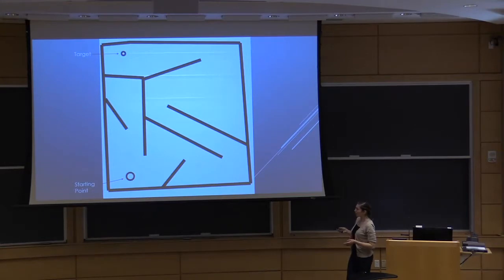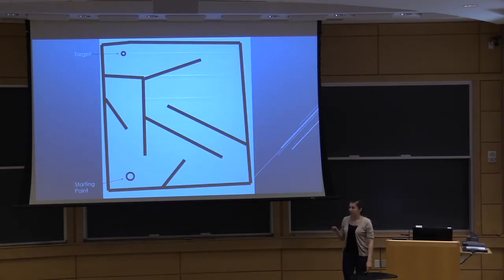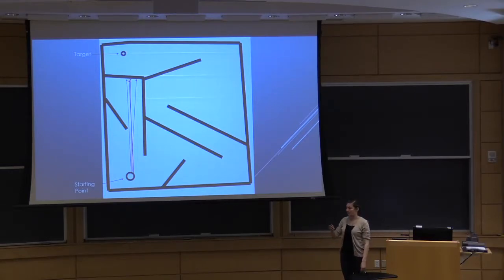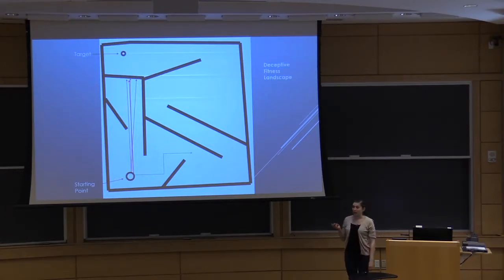A maze problem is really common in novelty search literature. We have a starting point and a target point, and fitness is determined by how close you are at the end of your run to the target. If you select for more and more fit individuals, you end up with programs that go as fast as they can toward the target and hit a wall — they're close, but stuck. Programs that initially go down and away are not selected because they're not very fit, but those are the ones that could potentially reach a solution. A deceptive fitness landscape is where promising-looking programs based on fitness will not lead to solutions because they get stuck.